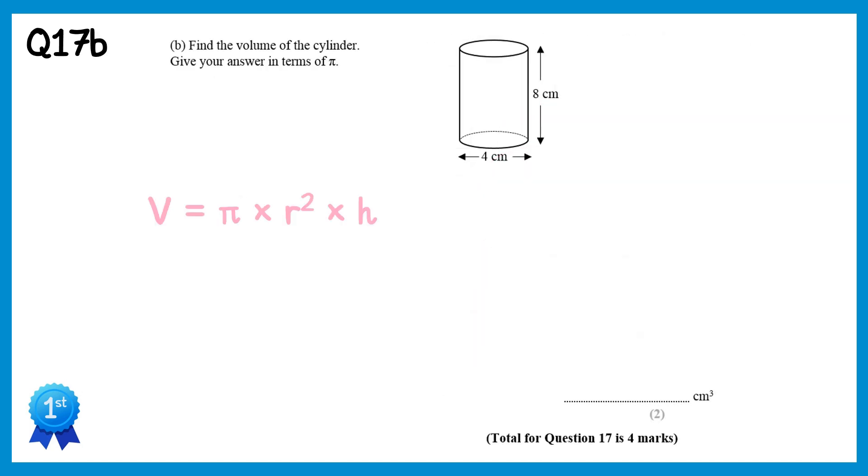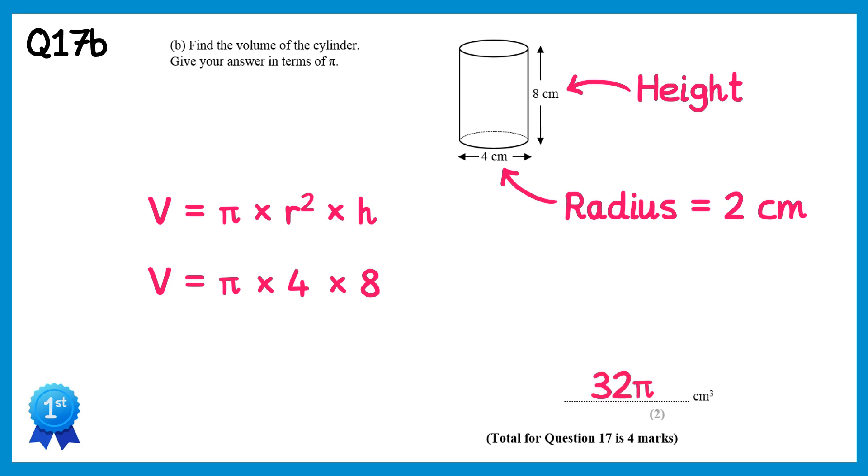The volume of a cylinder is given by pi times r squared times h, so we'll do pi, times the radius squared, now remember the diameter was 4, so the radius is 2, so it's 2 squared, and then times the height, which is 8. 2 squared is 4 though, so we have pi times 4 times 8. 4 times 8 is 32, so the answer to this question is 32 pi.